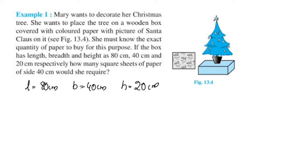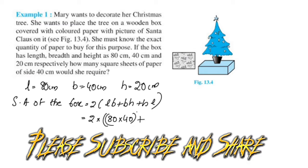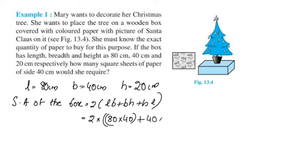The surface area is a cuboid shape. The surface area of the box is equal to 2 into LB plus BH plus HL. This is the surface area of the box.